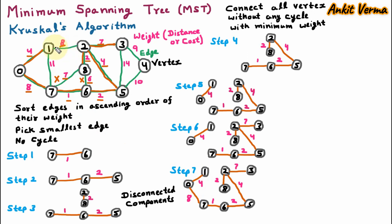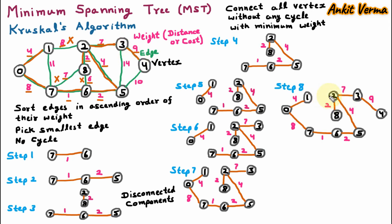Now we again pick the next minimum edge with weight 8, but we check that connecting vertices 1 and 2 would form a cycle, so we do not pick that option. From the graph we pick the next minimum edge with weight 9 and connect the edge between vertices 3 and 4. In step 8 one more edge is added. Now we can see that all the vertices are connected, so we stop here.